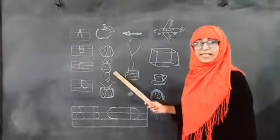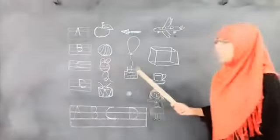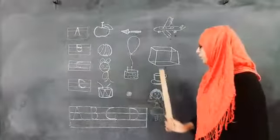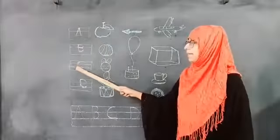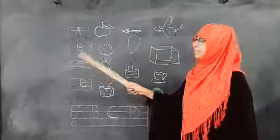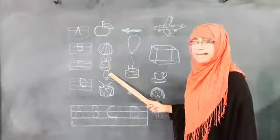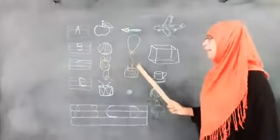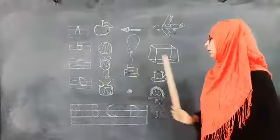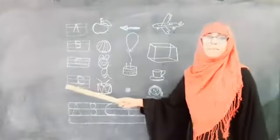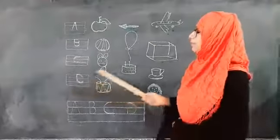And then C, C for cat, C for cake, C for cup. Again C, C for cat, C for cake, C for cup.